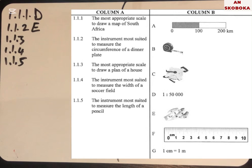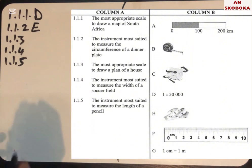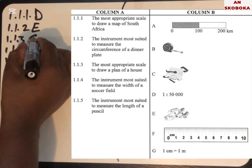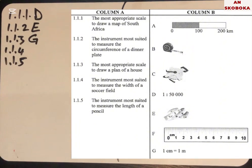Question three asks for the most appropriate scale to draw a plan of a house. The answer is G, which is one centimeter equals one meter. You can use this scale when you draw a plan of a house.